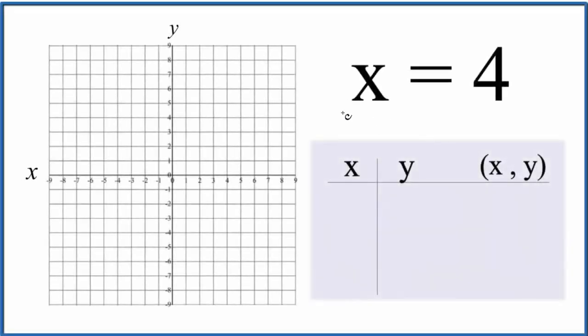Let's graph the equation for x equals 4. When we have x equals some number, we just go on the x-axis, find that number, and it's going to be a vertical line through that point. So there's our line, and we can put arrows on it to show that it goes to infinity. That's the graph for x equals 4.